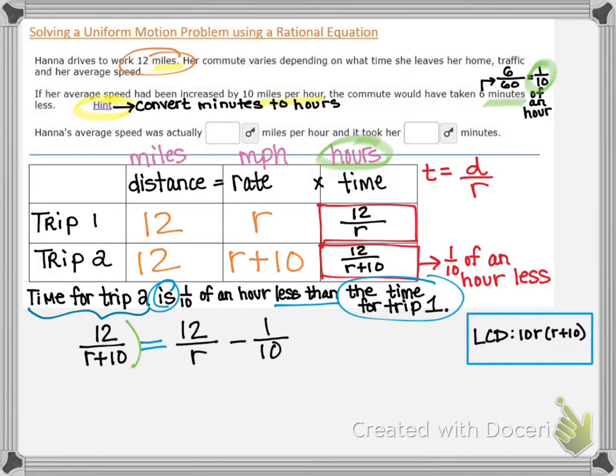So now we are going to multiply both sides of the rational equation by the LCD. So you can multiply by 10 R times the binomial R plus 10 over 1. And now we get to distribute the LCD. So on the left side, when we distribute the binomial R plus 10 is a common factor that will divide out. So we will be left with the numerator 12 times 10 R.